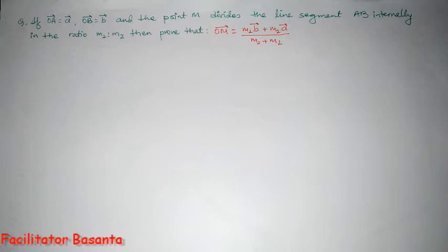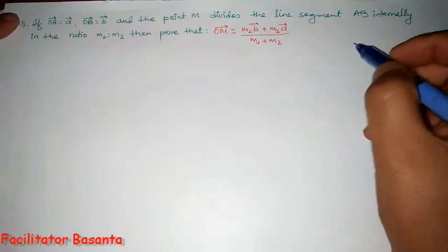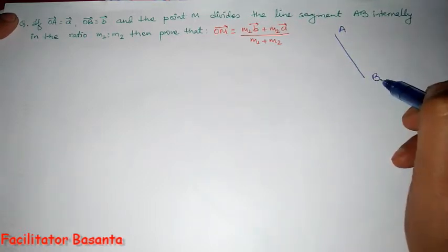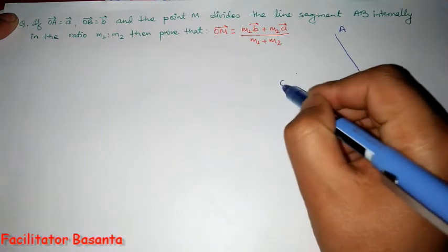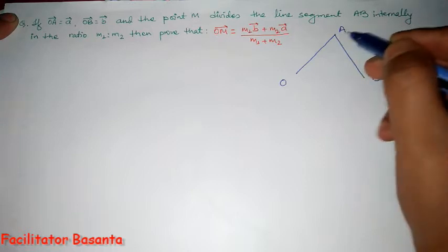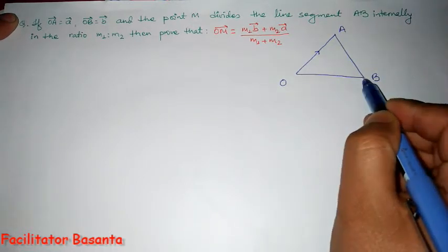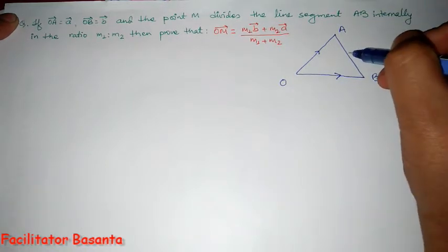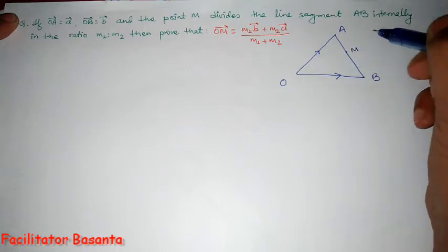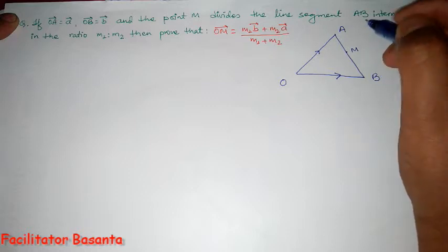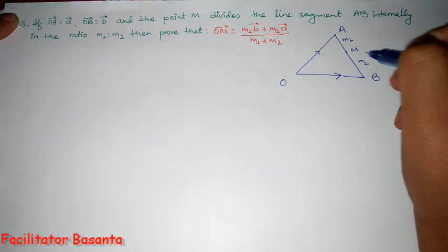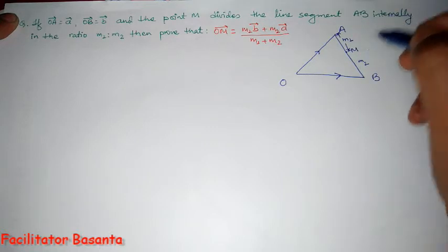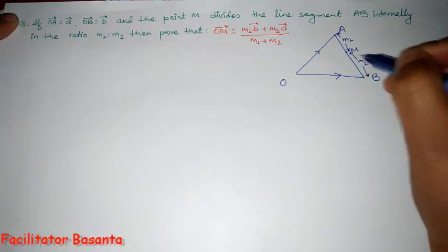For this, let's first draw the figure. There is a line segment AB, where O is the origin. OA is the vector A, and OB is the vector B. According to the problem, there is a point M which divides line segment AB internally in the ratio M1 is to M2 — this part is M1 and this part is M2.